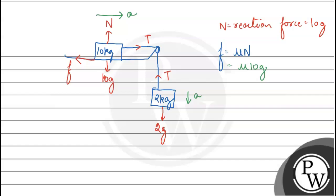Now, if we write the equations: 2g - T = 2a for the block, and T - μ10g = 10a for the trolley.